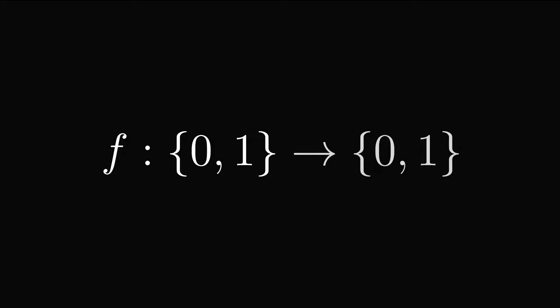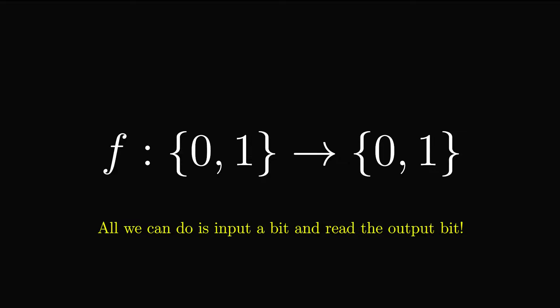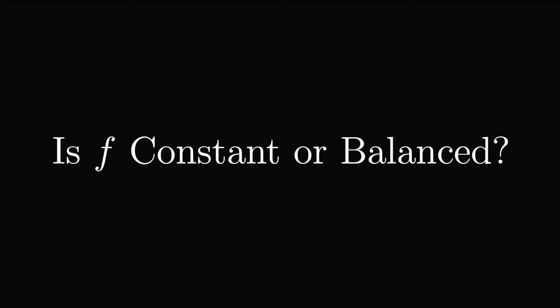Imagine we have a function f that takes in a bit, either 0 or 1, and returns a bit. It is given to us as a sort of black box — we cannot look inside this function to see what it does or try to understand how it works. The only thing we can do is send in a bit and read the output bit. Our task is to find out if this function f is constant or balanced.